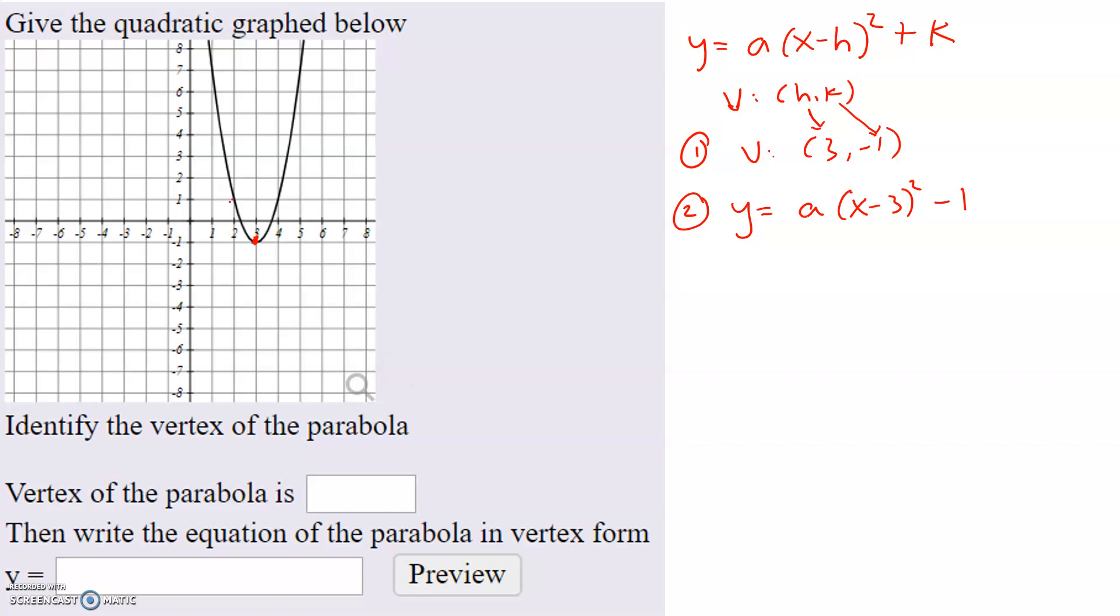So we could pick the point 2 comma 1, or we could pick the point 4 comma 1. It really doesn't matter, as long as it's an exact point without any decimals. So let's just go with 2 comma 1. It doesn't matter which one. You'll get the same answer regardless. So we're going to choose the point 2 comma 1.